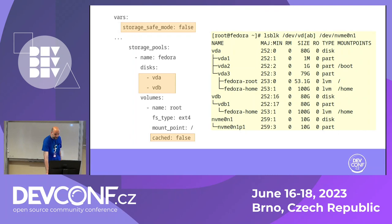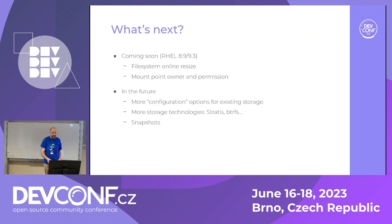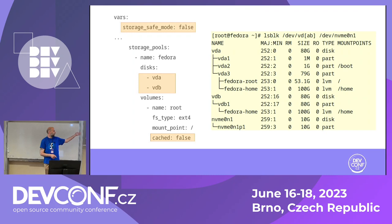This is some of the more advanced stuff you can do with the role. Of course I didn't show the very basic features like adding a new logical volume — you just put it under the volumes with a name, size, file system type, and mount point. And as I mentioned, mount points are managed in FSTAB, unless you tell us not to. So if you put a mount point there, we will mount the device for you and put it in FSTAB so it's mounted during boot.